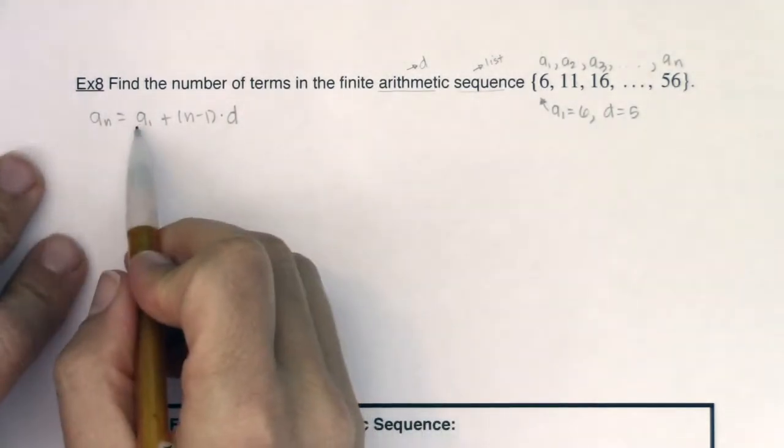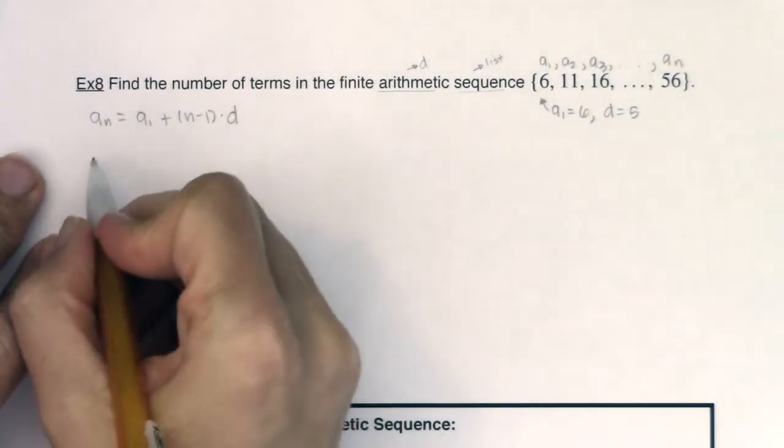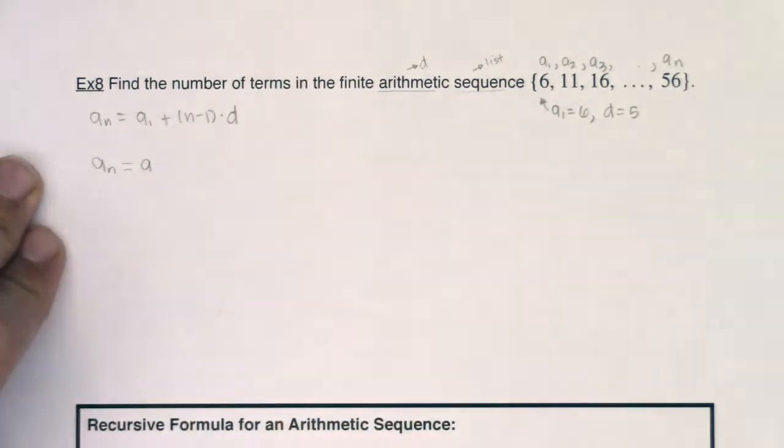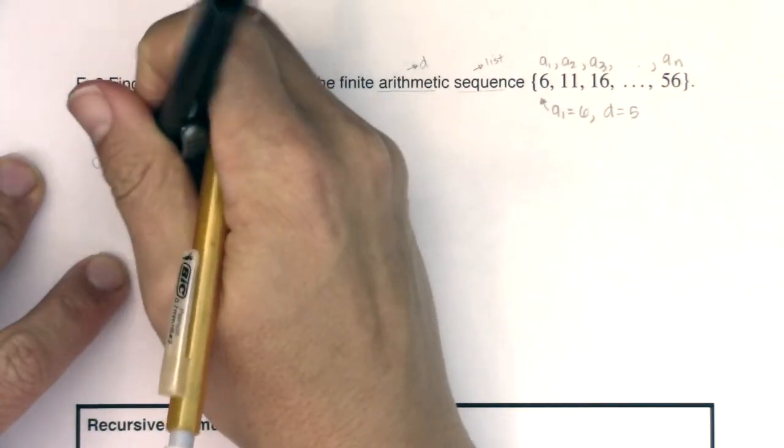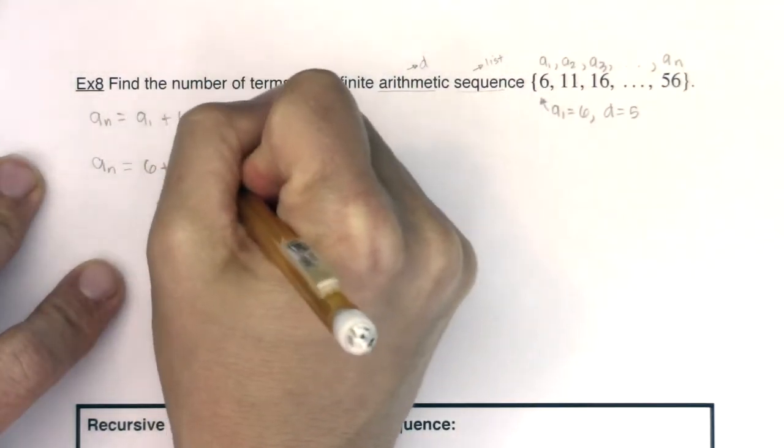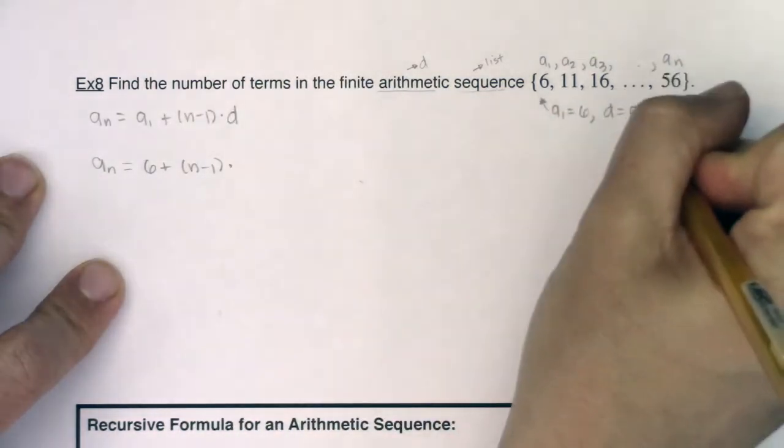So let's see what we have. We know a sub 1 is 6 and we know d is 5, so let's work that. We know a sub n will be equal to—let me write a sub 1, the actual value this time out—is 6 plus n minus 1 times, what was our d value, 5.